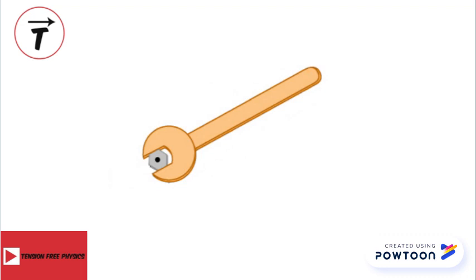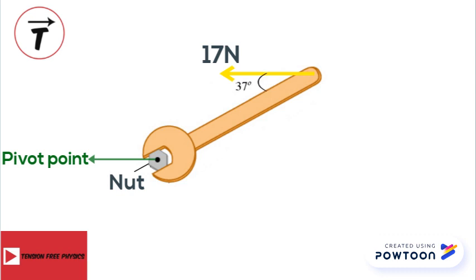Consider a wrench that has the ability to rotate about a fixed axis passing through its pivot point and perpendicular to the plane of the screen. A force of magnitude 17 newtons is applied at the end of the wrench at an angle 37 degrees with the axis of the wrench and 25 centimeters away from the pivot point.